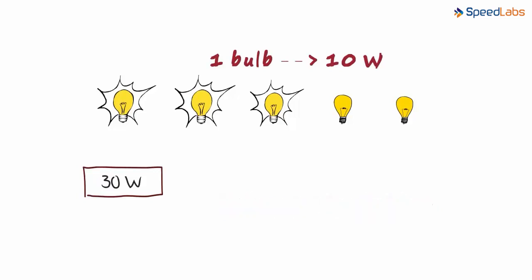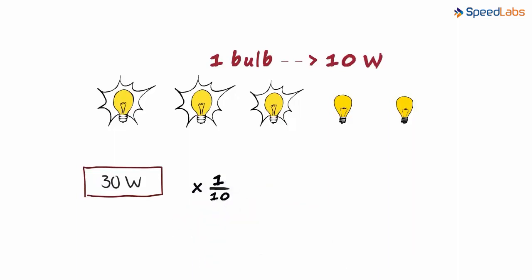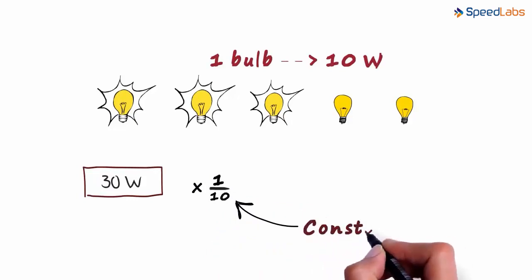So what you're doing essentially is multiplying the total power by 1 by 10 to find the number of bulbs that are lit. This is the constant K that you come across in direct variation.